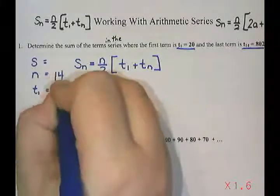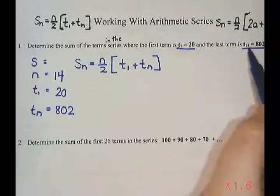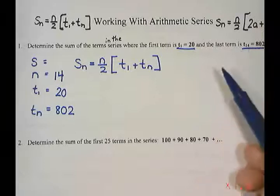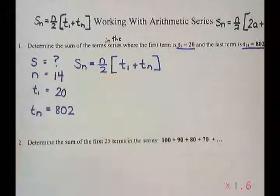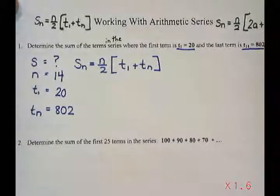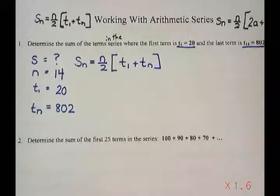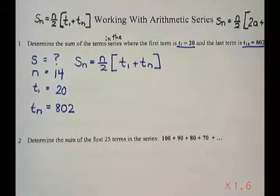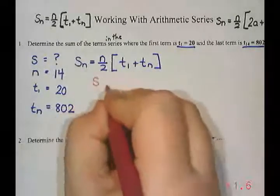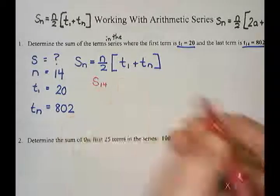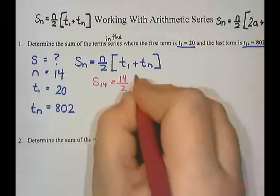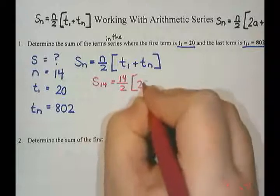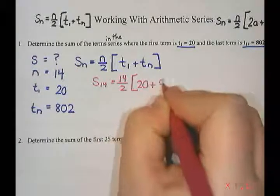If term 14 is the last term, then there must be 14 terms in the sequence. So I'm going to put a 14 here, because if the last term is 14th term, then there's 14 terms in the sequence or the series. So here what I'm going to do is just substitute all my numbers in. So S, the sum of the first 14, is 14 divided by 2 times term 1 which is 20 plus term 14 which is 802.